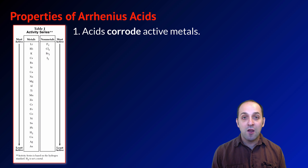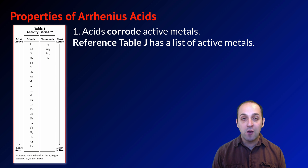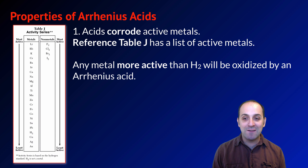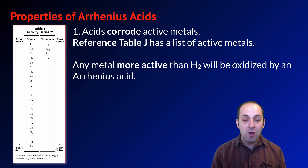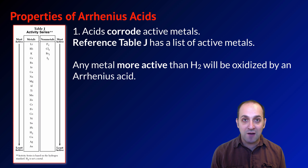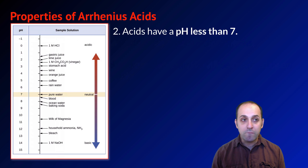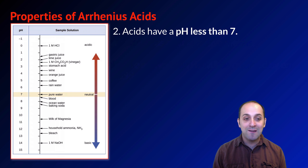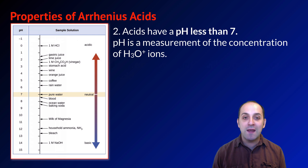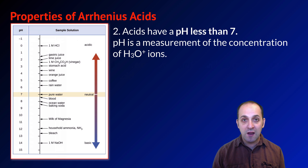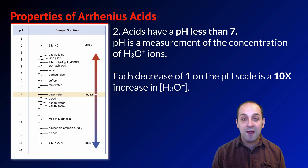Let's talk about some properties of Arrhenius acids. First, acids corrode active metals. Looking at Reference Table J, the activity series, any metal more active than H₂ will be oxidized by an Arrhenius acid — the metal is oxidized and H₂ gas is produced. Second, acids have a pH less than 7. pH is a measurement of the concentration of H₃O⁺ ions — the lower the pH, the more concentrated it is. The pH scale is logarithmic, so each decrease of 1 is a 10-times increase in H₃O⁺.